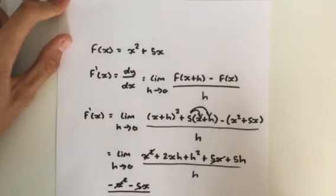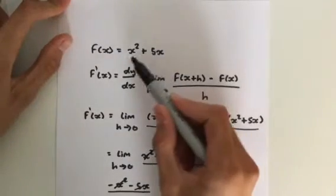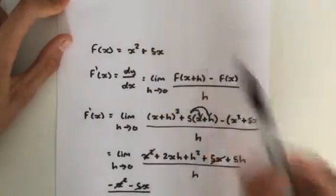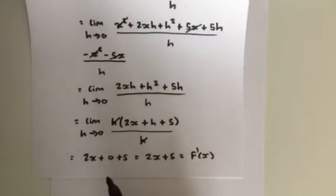Now if we use the power rule, we get the exact same answer. x squared was 2x. Now 5x is just 5, as we got at the bottom.